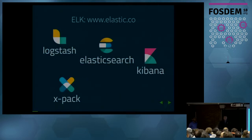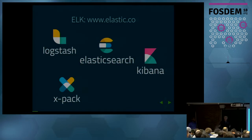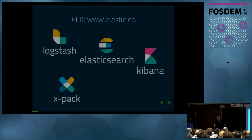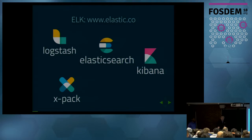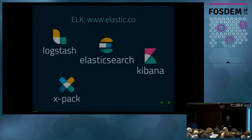You probably all know what Elasticsearch is, what Logstash and Kibana are — that's the stack of different products from Elastic. Elasticsearch is basically the database. Logstash is a data pipeline that allows you to get data, transform it, and put it into Elasticsearch. And Kibana is the GUI for all of this — you can query Elasticsearch, monitor things, etc.